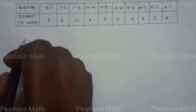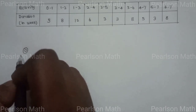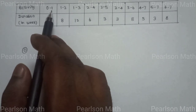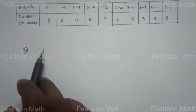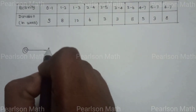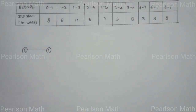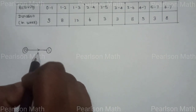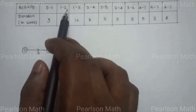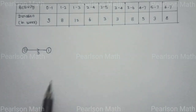Let's look at the graph. First, activity 0 to 1 has a duration of 3. Next, from node 1 we have activities 1 to 2 and 1 to 3. Activity 1 to 2 has duration 8, and activity 1 to 3 has duration 12.